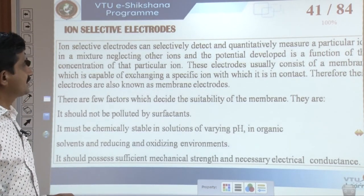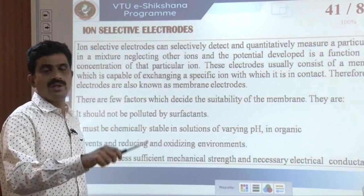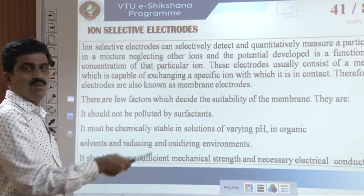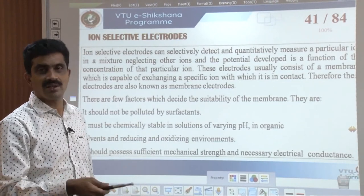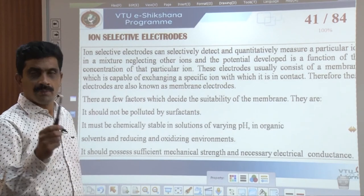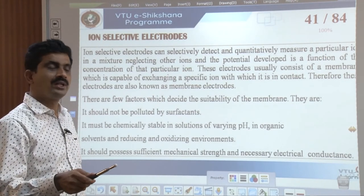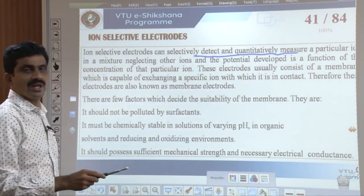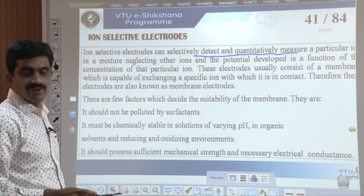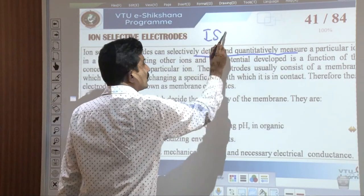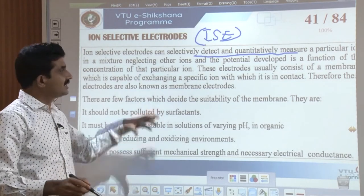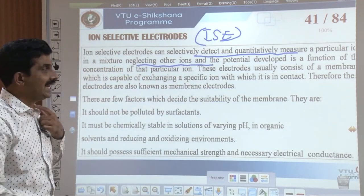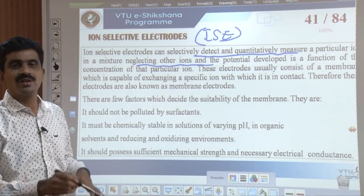There are two types of ion selective electrodes: crystalline membrane electrodes and non-crystalline membrane electrodes. In crystalline membrane electrodes, a thin crystalline membrane is used. There are two subtypes: single crystal and polycrystalline. A single crystal example is lanthanum fluoride (LaF₃) for measuring fluoride ions — the membrane consists of a single lanthanum fluoride crystal doped with europium fluoride to reduce bulk resistivity.